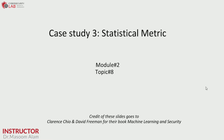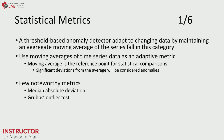Welcome to Topic 8. Here we do a very simple way of anomaly detection using statistical metric calculation. We will be discussing two ways: one is Median Absolute Deviation, which is a statistical metric, and the second one is the Grubbs Outlier Test.